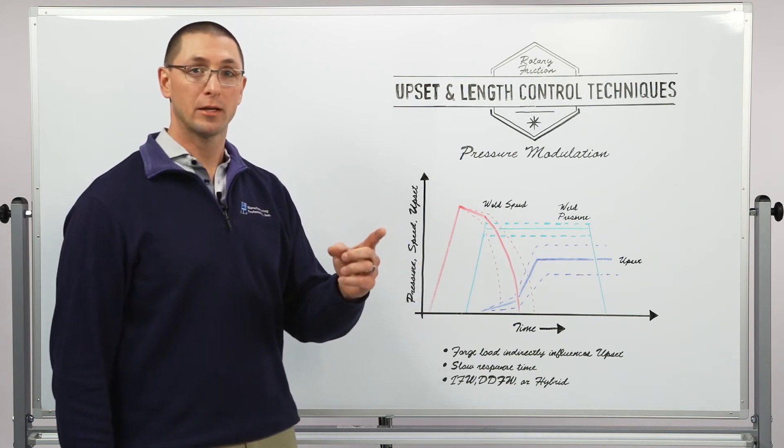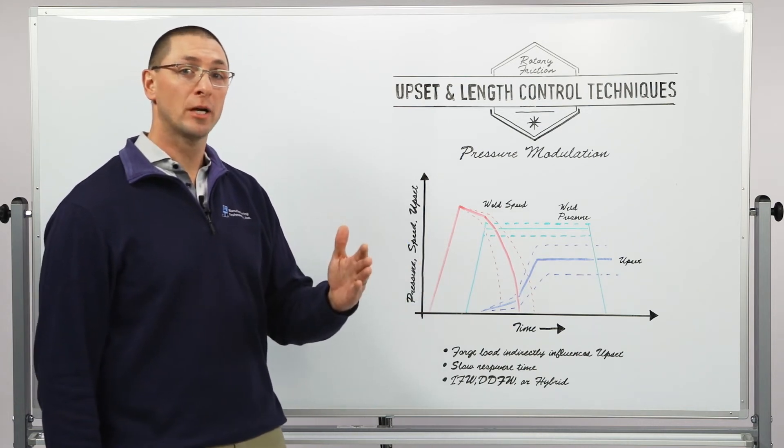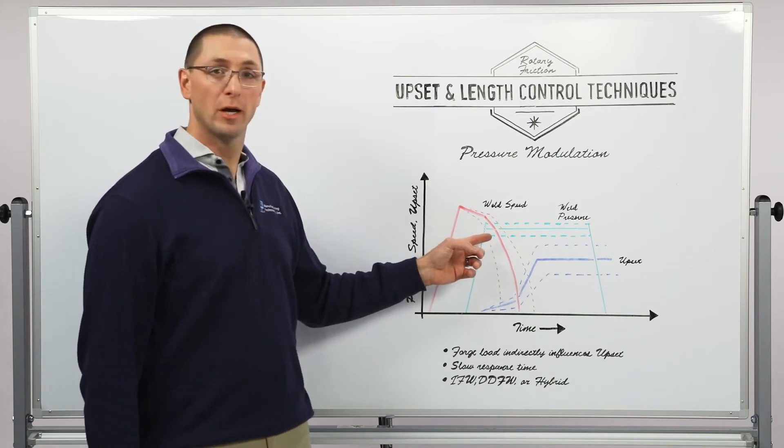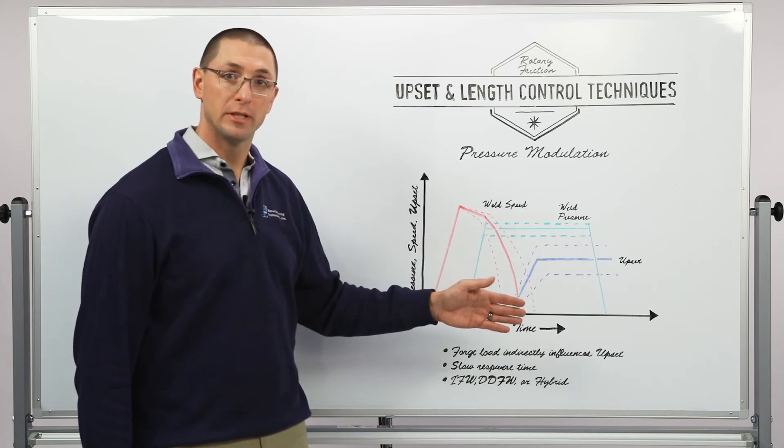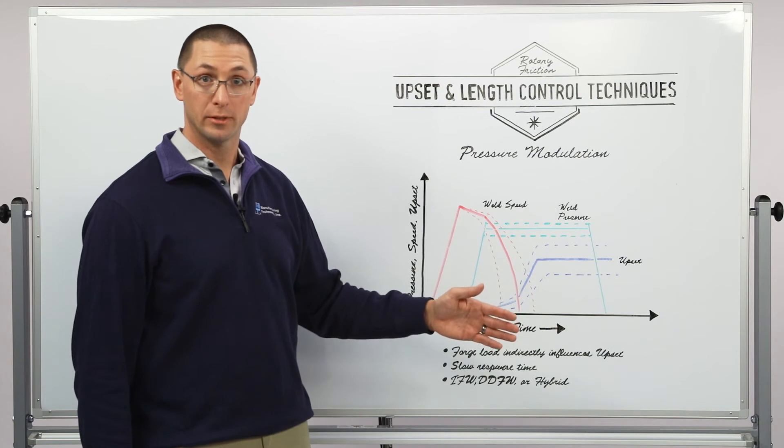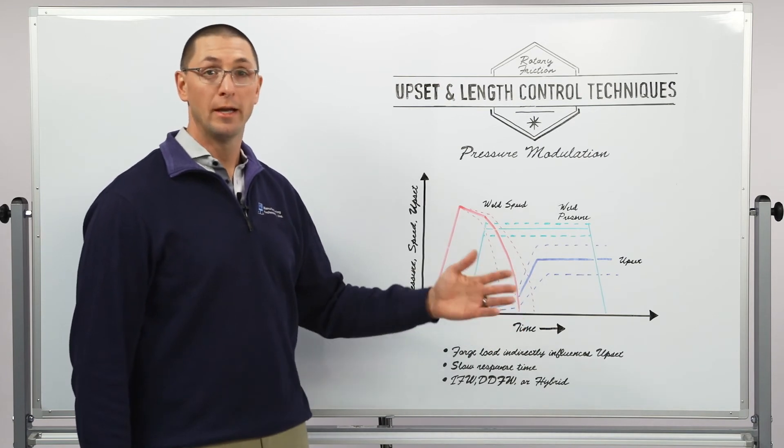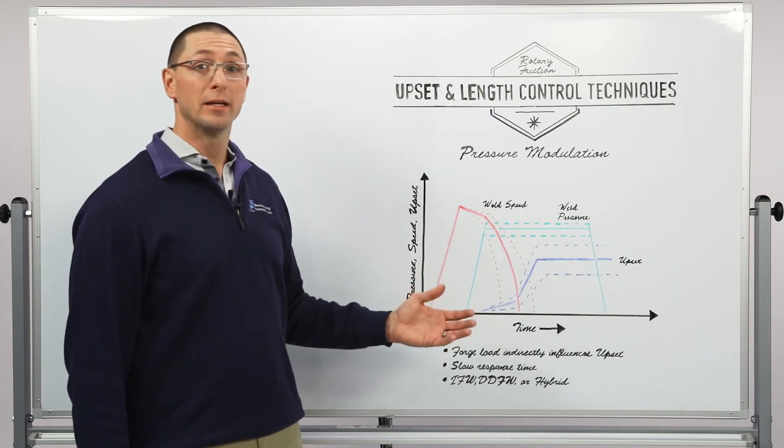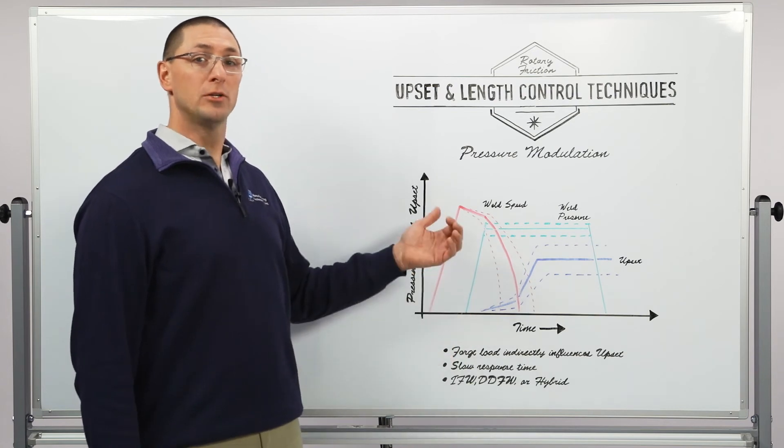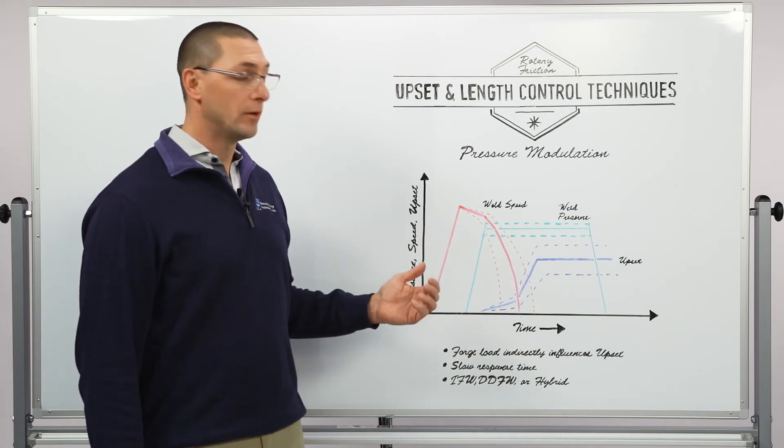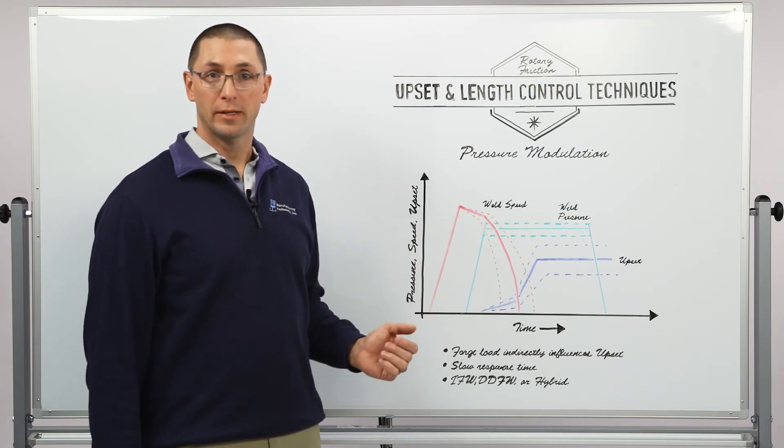We feed that error signal back into the controller. If I'm getting too much upset, then I want to decrease my weld pressure in order to decrease the amount of upset that I'm getting so that I get zero error signal between the weld and the profile. If I'm getting too little upset, then I want to increase the weld load in order to increase the amount of upset that I'm getting.